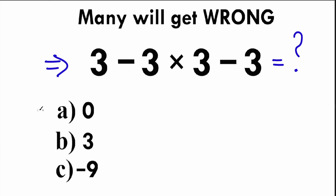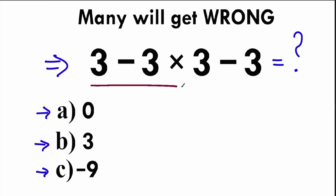Right here we have three options. We have option A zero, we have option B three, and we have C minus 9, which is quite easy because we have only three options. So right now this is up to you — what do you think is the correct answer to this question? Write your option and solution down into the comment section.